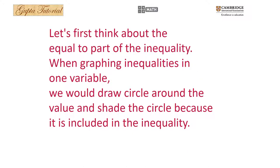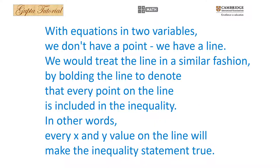Let us first think about the equal-to part of the inequality. When graphing inequalities in one variable, we draw a filled circle around the value because it is included in the inequality. With equations in two variables, we don't have a point — we have a line. We treat the line similarly by bolding it to denote that every point on the line is included; in other words, every x and y value on the line will make the inequality statement true.